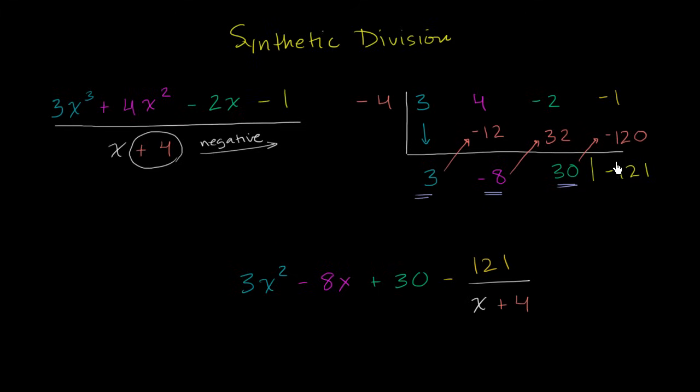Another way you could have done it, you could have said this is the remainder, so I'm going to have a negative 121 over x plus 4. And it's going to be plus 30, minus 8x, plus 3x squared. So hopefully that makes some sense. I'll do another example in the next video, and then we'll think about why this actually works.